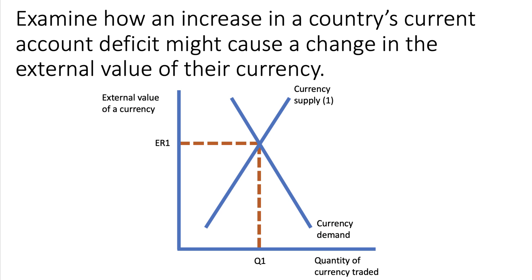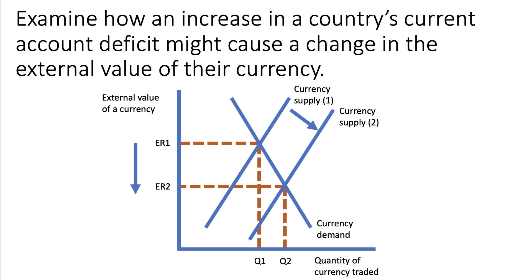We can model this using fairly simple, straightforward supply and demand analysis. There's the equilibrium exchange rate at ER1 initially. If we're importing more, the value of our imports causes the supply of currency to increase to CS2. So, other things being the same, that brings down the equilibrium value of the exchange rate from ER1 to ER2.